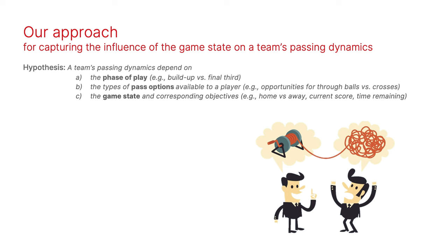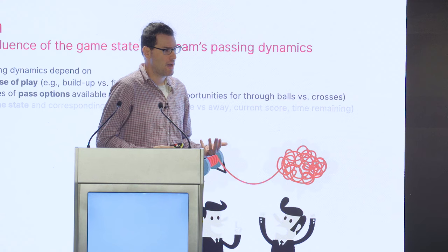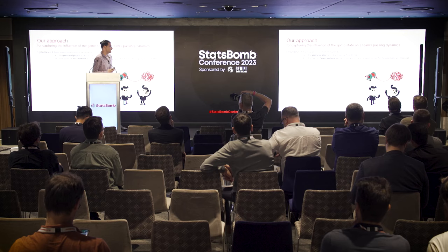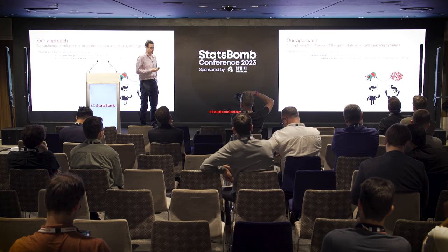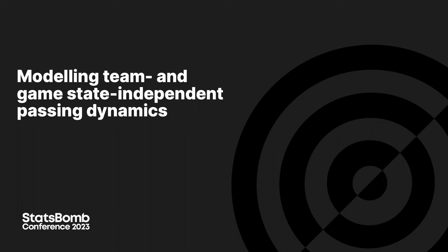Our goal is to try to incorporate information about the game state into these models. Our hypothesis is that there are three factors affecting passing behavior: one is the phase of play — where the ball is, think buildup versus chance creation; the second is what passing options are available, so the configuration of players on the field; and the third is the game state — home/away, current score, and time remaining. We'll start by looking at phase of play and options available, independent of game state.